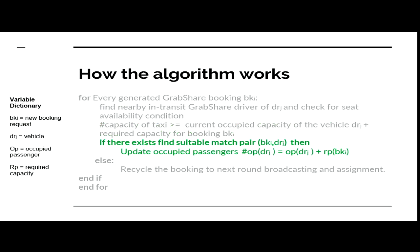If there is an existing match, find the matching pair and update the occupied passenger count by adding the required capacity. Else, if there is no suitable match pair, recycle the booking to the next round of broadcasting and assignment, and then end the if statement and the for statement.